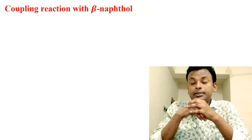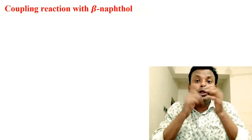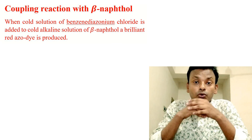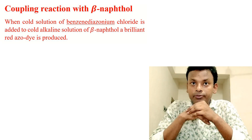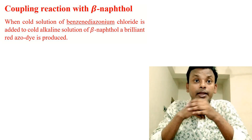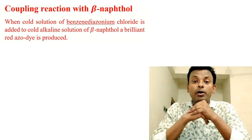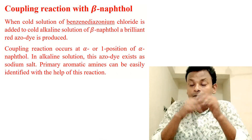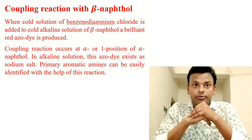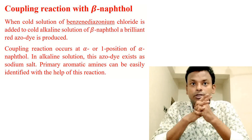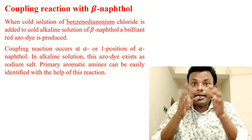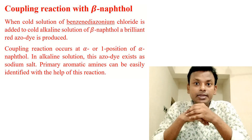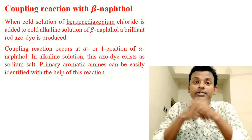Coupling reaction with beta-naphthol: when cold solution of benzene diazonium chloride is added to cold alkaline solution of beta-naphthol, a brilliant red azo compound is produced. Coupling occurs at the alpha or 1-position of beta-naphthol in alkaline solution, where the azo compound exists as a sodium salt. Primary aromatic amines can be easily identified with the help of this reaction.